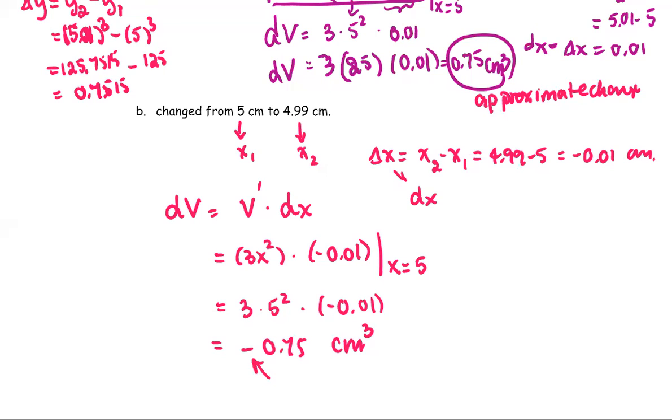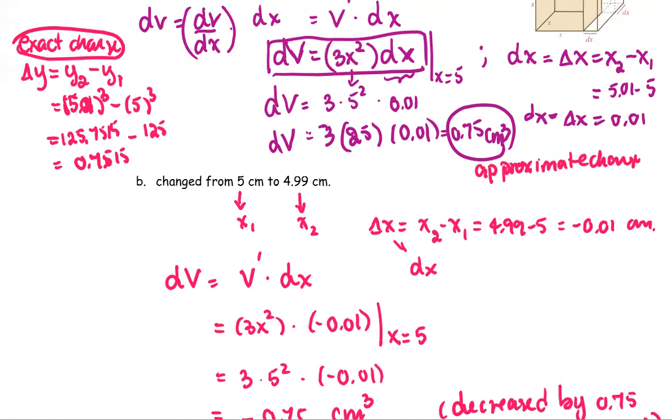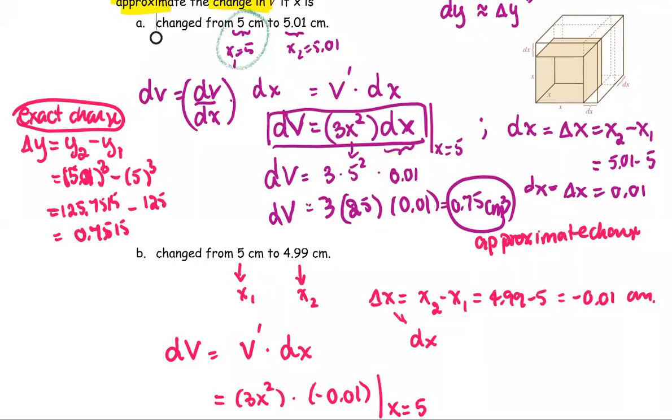The number negative tells us about decreasing. So it decreases by 0.75 cubic centimeters. Where the first part of the problem, the delta x is positive, so that means the change is in the positive way or increase.